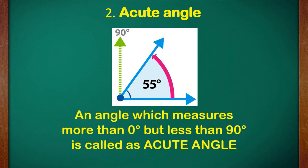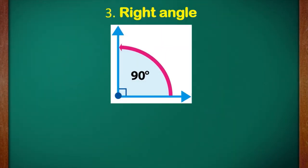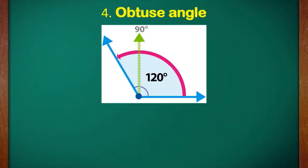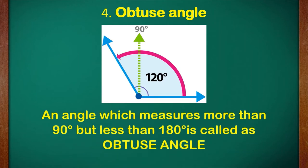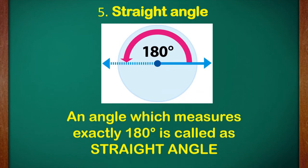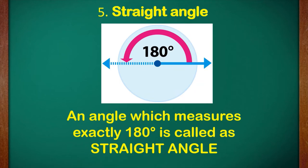Number two, we have acute angle which we had already studied — an angle which measures more than zero degree but less than 90 degree is called an acute angle. Number three, we have right angle — an angle which measures exactly 90 degree. Number four, obtuse angle — an angle which measures more than 90 degree but less than 180 degree. Number five, we have straight angle — an angle which measures exactly 180 degree. The arms make a straight line, hence it is known as straight angle.